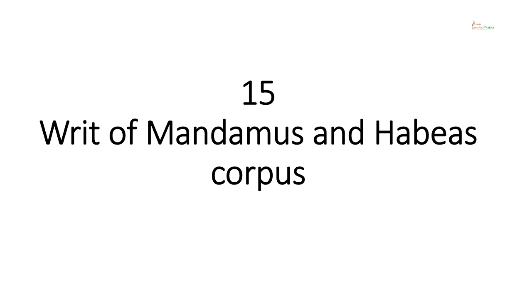Hello friends, you all are welcome to the fifteenth session of the course of administrative law. In continuation to the modes of judicial review, in the present lecture we are going to discuss the writ of mandamus and the writ of habeas corpus. In the earlier lecture we discussed the writ of certiorari, the writ of prohibition and the writ of quo warranto. The writ of mandamus and the writ of habeas corpus are also very important modes of judicial review of administrative action.